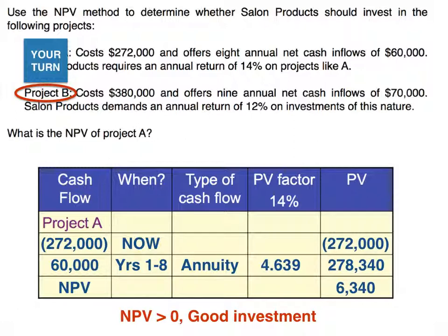For Project A, we invested $272,000 now, so the present value of that capital outlay is $272,000 — shown in parentheses because it's an outgoing of cash. The $60,000 annual net cash inflows is a positive annuity occurring years one through eight. We multiply our annuity factor of 4.639 by $60,000 to get a present value of $278,340. Taking the difference between that and the capital outlay of $272,000 gives us a net present value of $6,340 — a positive number, so this is a good investment per the net present value model.